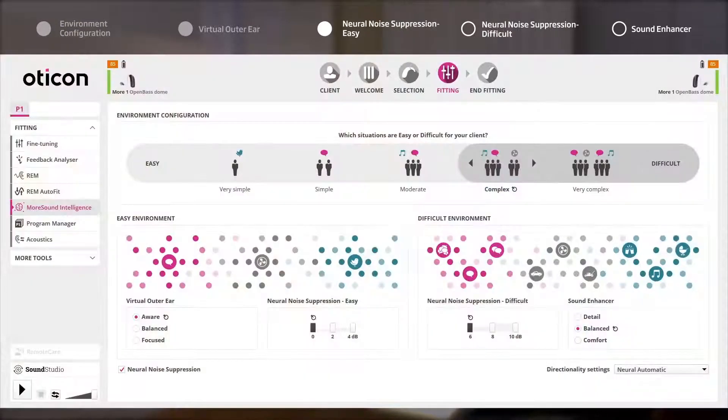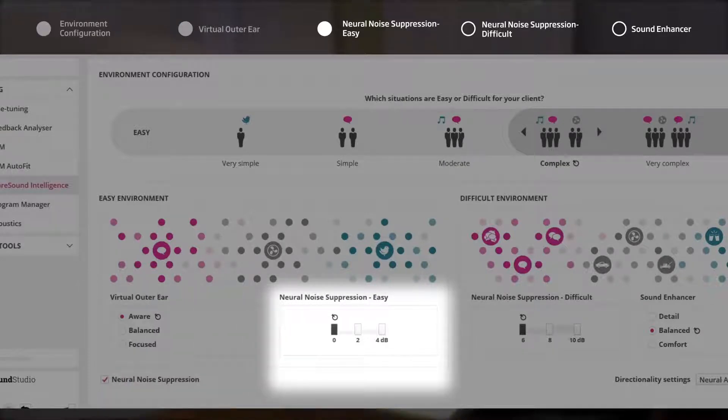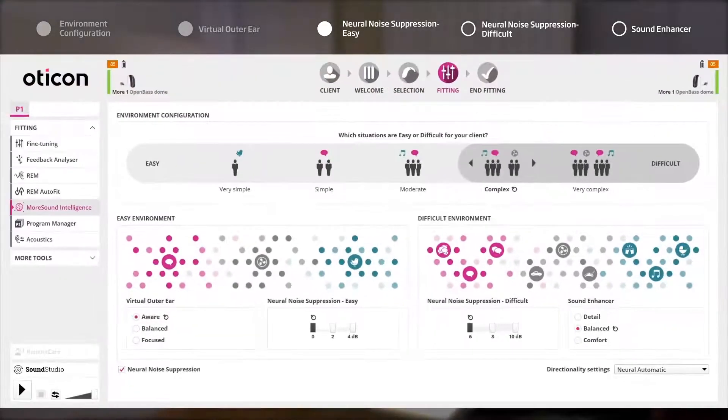If the listening situation is deemed easy, spatial cues are recreated by Virtual Outer Ear followed by Neural Noise Suppression. In this client's case, no noise suppression will be applied in easy situations.